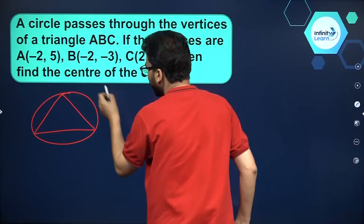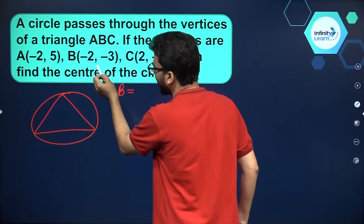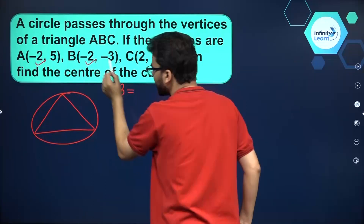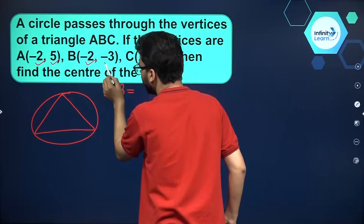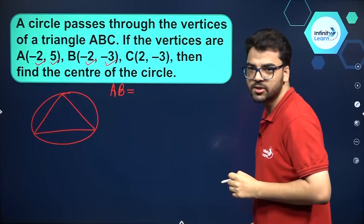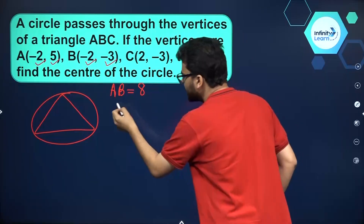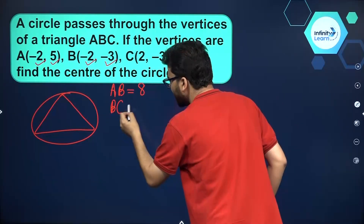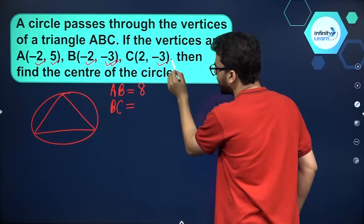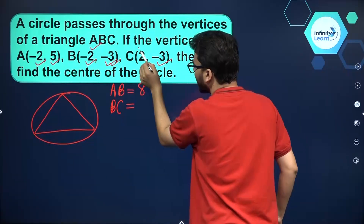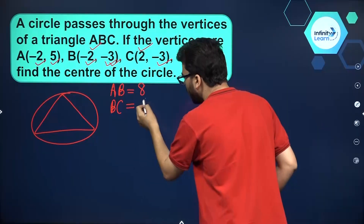What is AB? If we look at the coordinates, the x-coordinates are the same, so AB will be the difference between the y-coordinates — between 5 and minus 3 — so AB equals 8 units. And for BC, the y-coordinates are the same, so the difference between the x-coordinates gives BC, which equals 4 units.